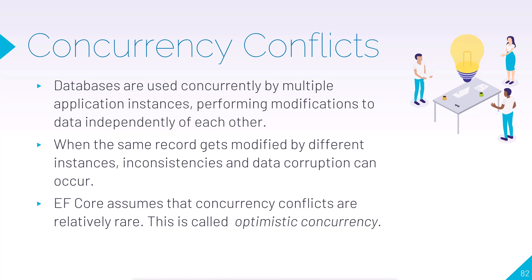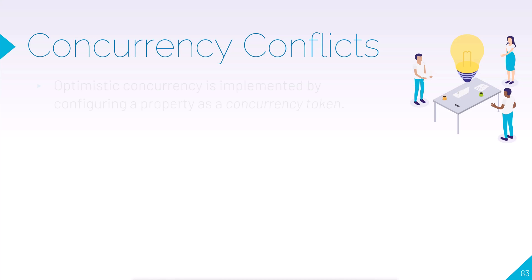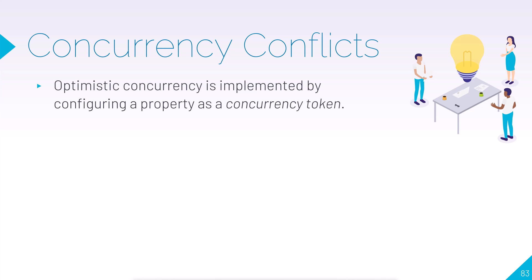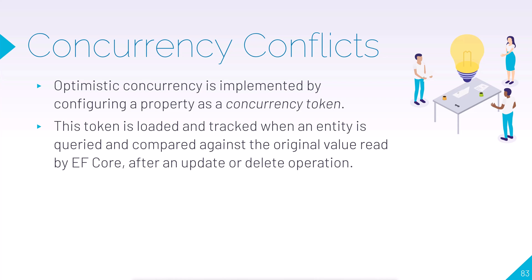EF Core assumes that concurrency conflicts are relatively rare, so it uses a technique called optimistic concurrency. Optimistic concurrency is implemented by conferring a property called a concurrency token on each database record. This token is loaded and tracked when a query is performed — tracked in the background and used to compare. It's like a version control token.